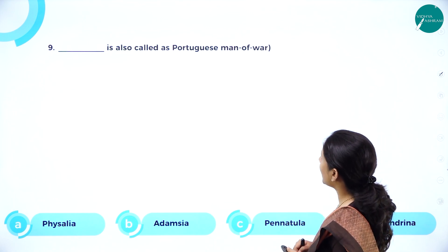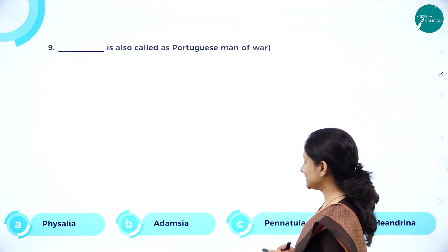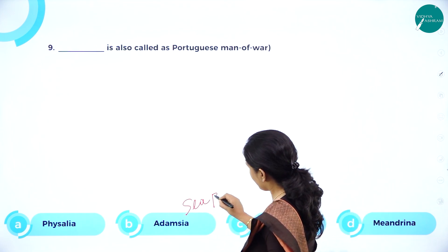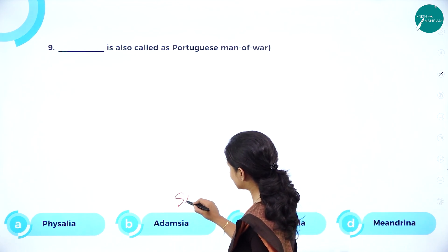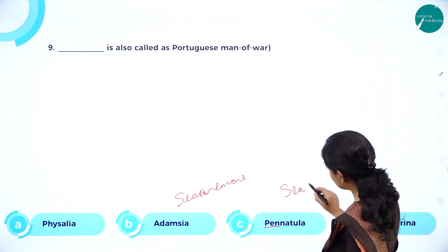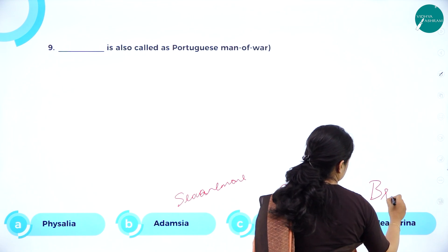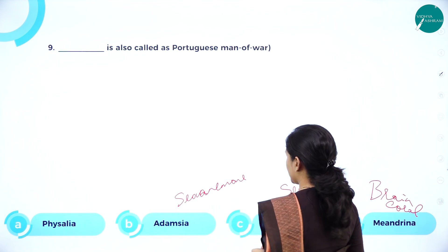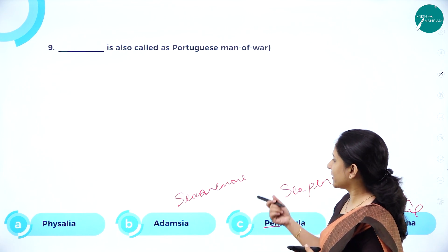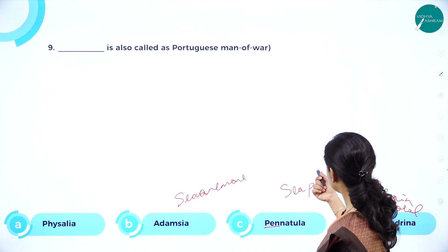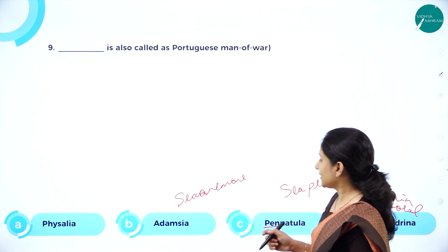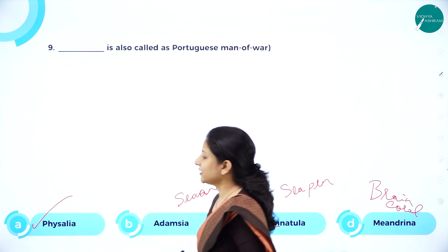Next: Dash is also called Portuguese man of war — is it physalia, adamsia, pennatula, or meandrina? Adamsia is called sea anemone. Pennatula — the word itself contains 'pen' — is sea pen. Meandrina is brain coral. Physalia is the one called Portuguese man of war. So the correct answer is physalia. Questions can also be framed as: dash is called sea anemone, dash is called sea pen, or dash is called brain coral.